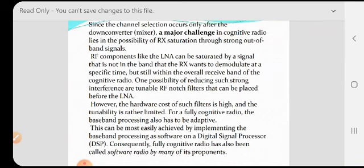To demodulate at a specific time and to clear interference, we use RF notch filters that can be placed before the low noise amplifier. However, the hardware cost of such filters is high and the tunability is rather limited for a fully cognitive radio.